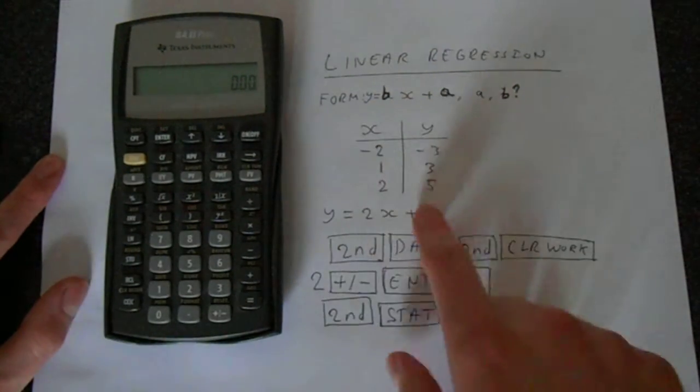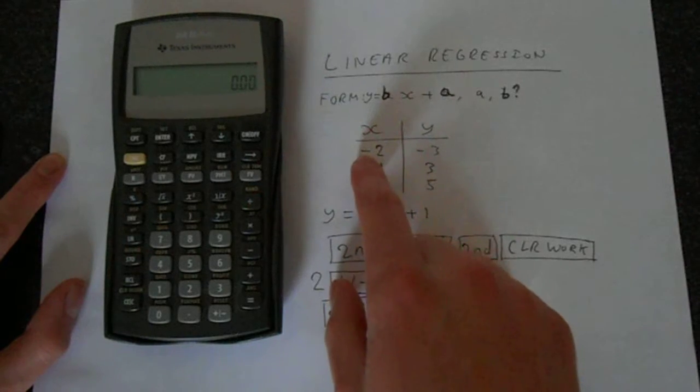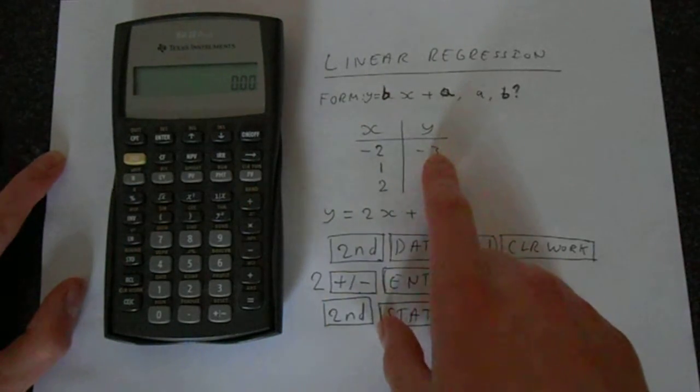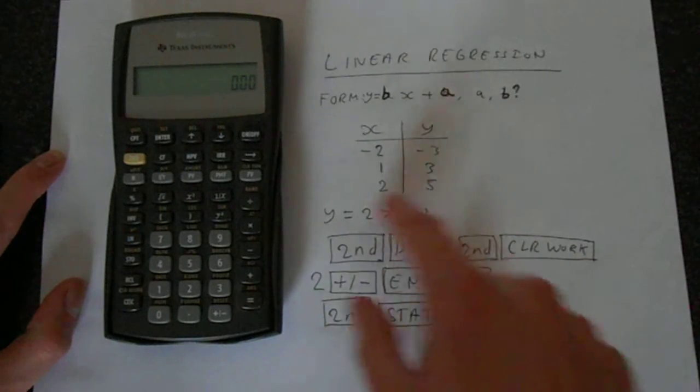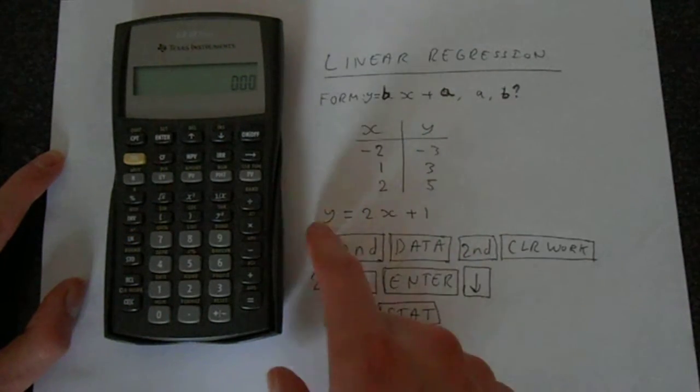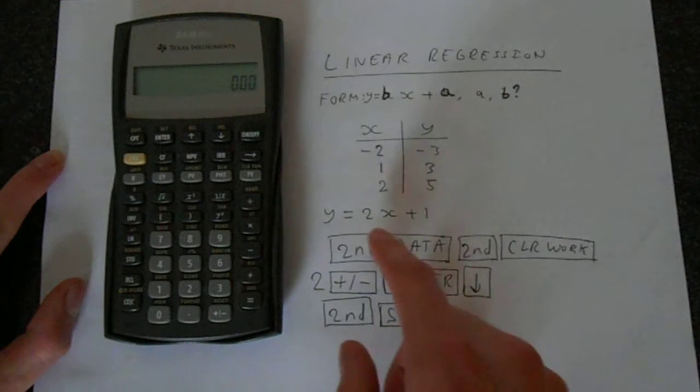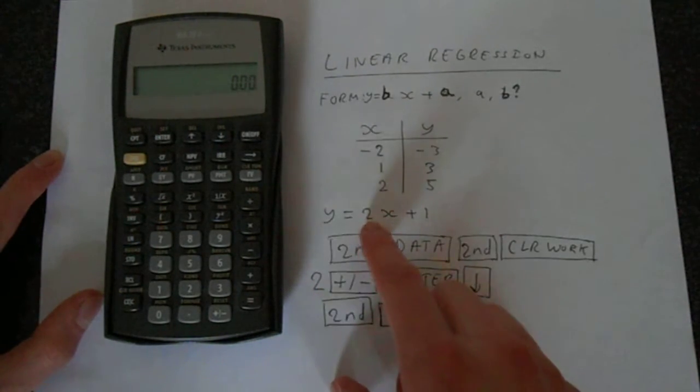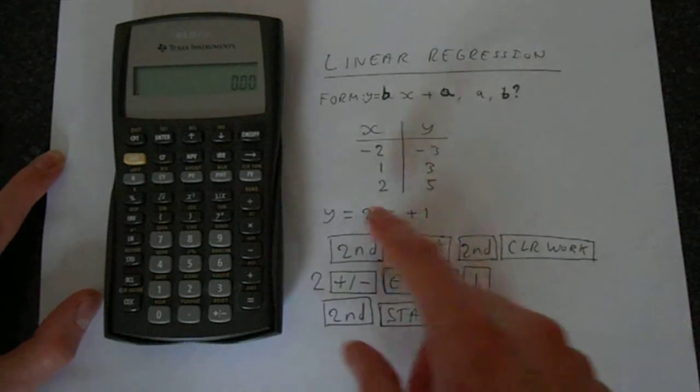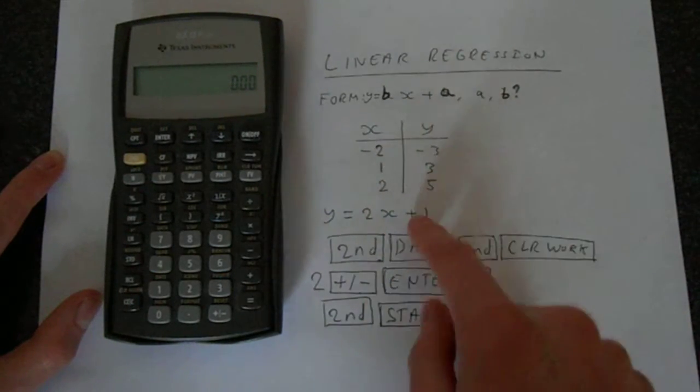So we've got this data here. We've got x is minus 2 gives us y is minus 3, so it's two sets of data, and we're finding the line that fits this data. This is a very simple example—it fits perfectly and gives us y equals 2x plus 1, so we expect b to be 2 and a to be 1.